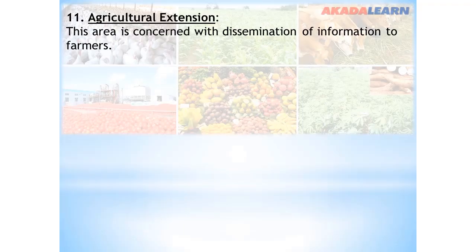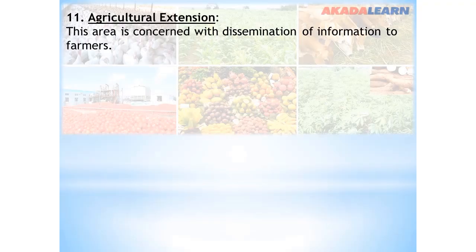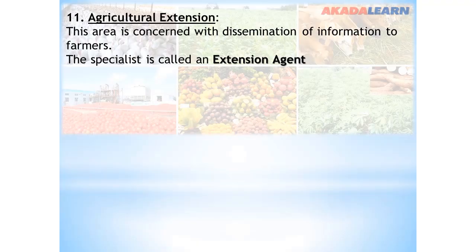In agriculture, we have research institutes where innovations are made, where new species of crops — that is, improved crops — and new species of animals, also improved animals, can be discovered. The work of agricultural extension is to take this to rural farmers, give them these new innovations, show them how to use them, and also motivate the farmers to embrace the new innovation. The specialist is called an extension agent.